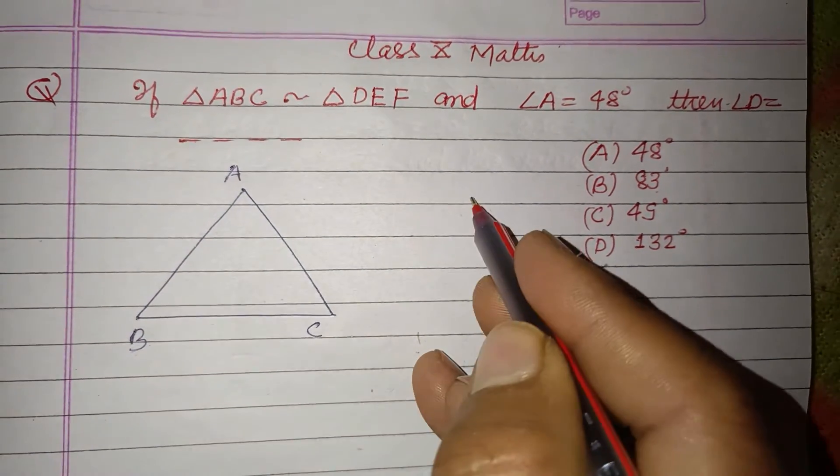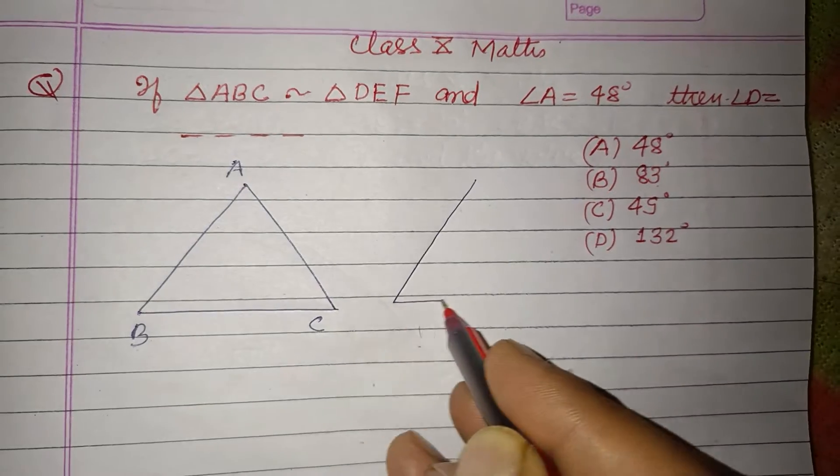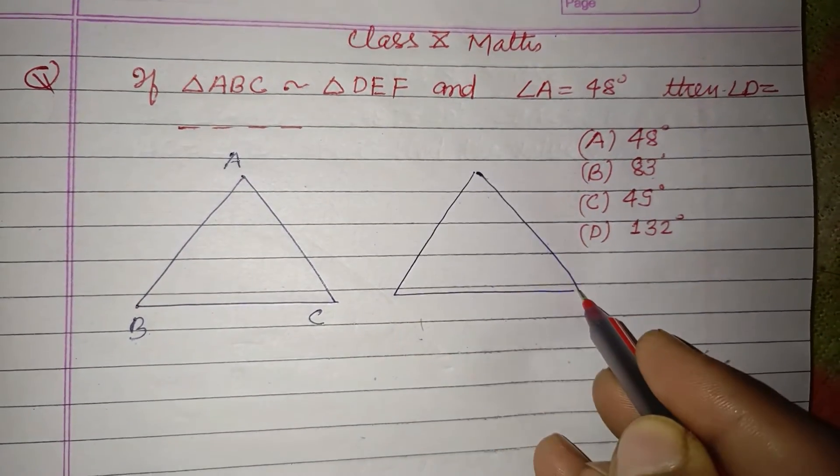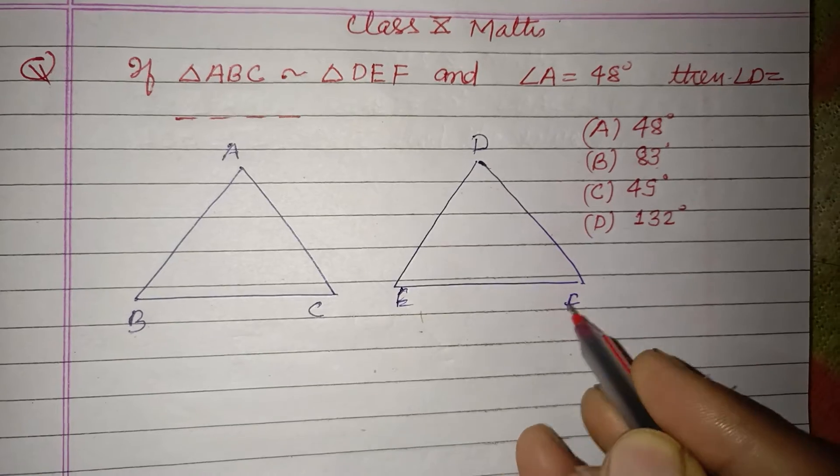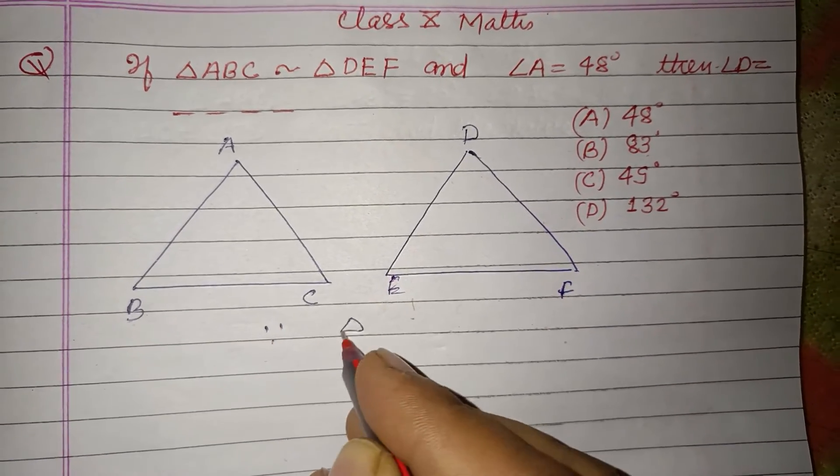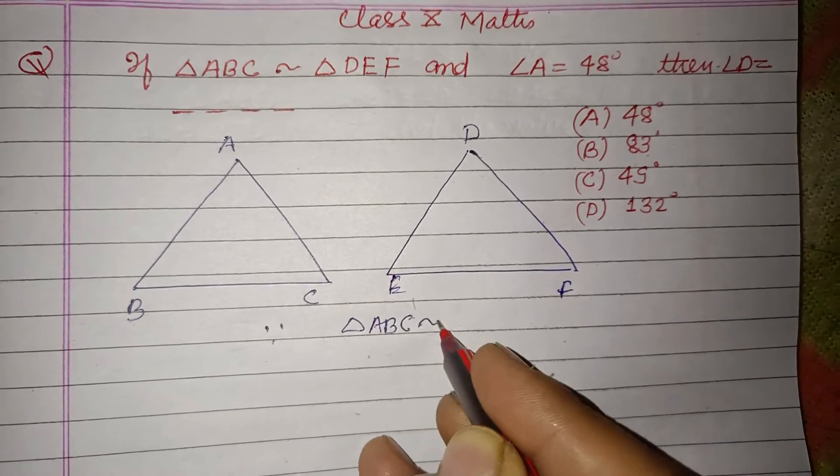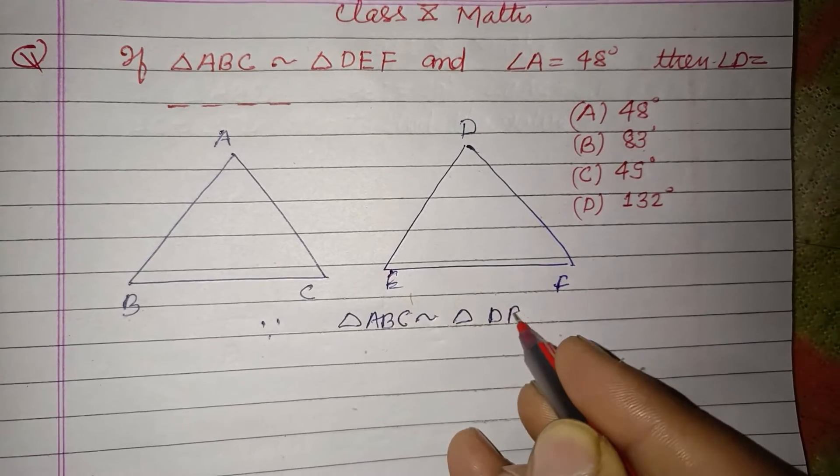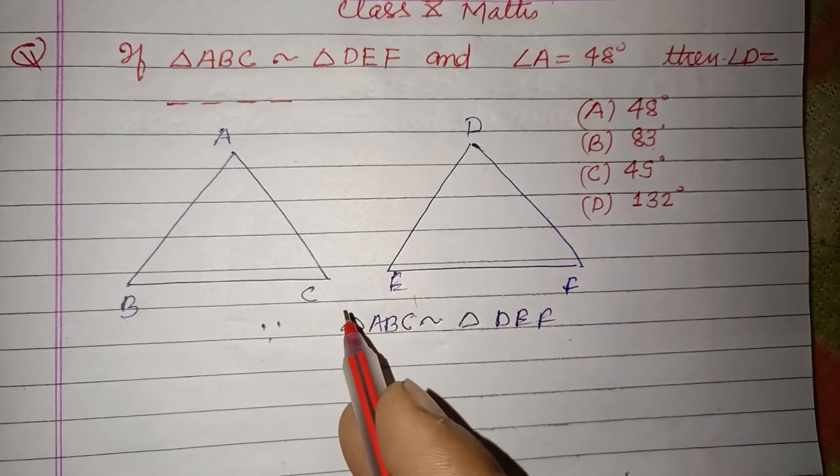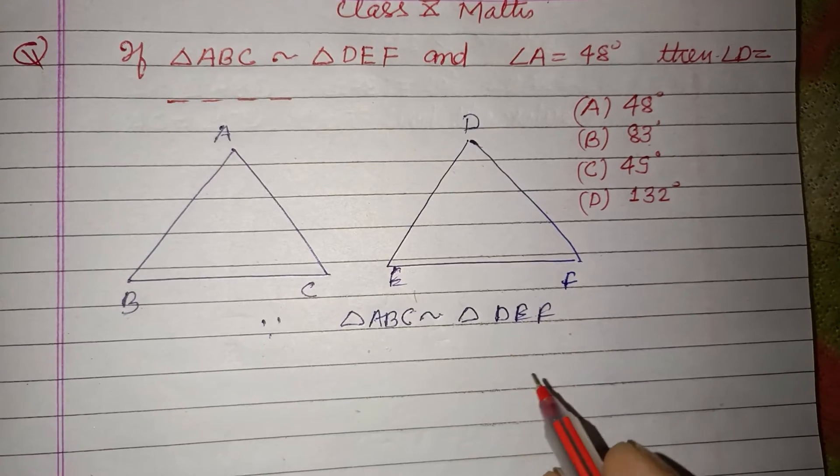and this is triangle DEF. Since triangle ABC is similar to triangle DEF, and similar triangles have equal respective angles,